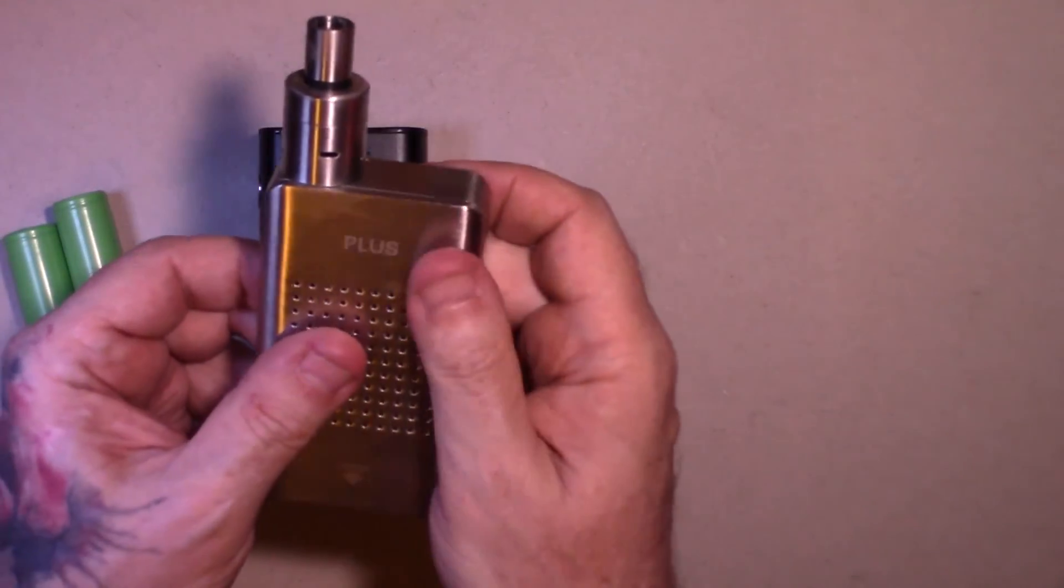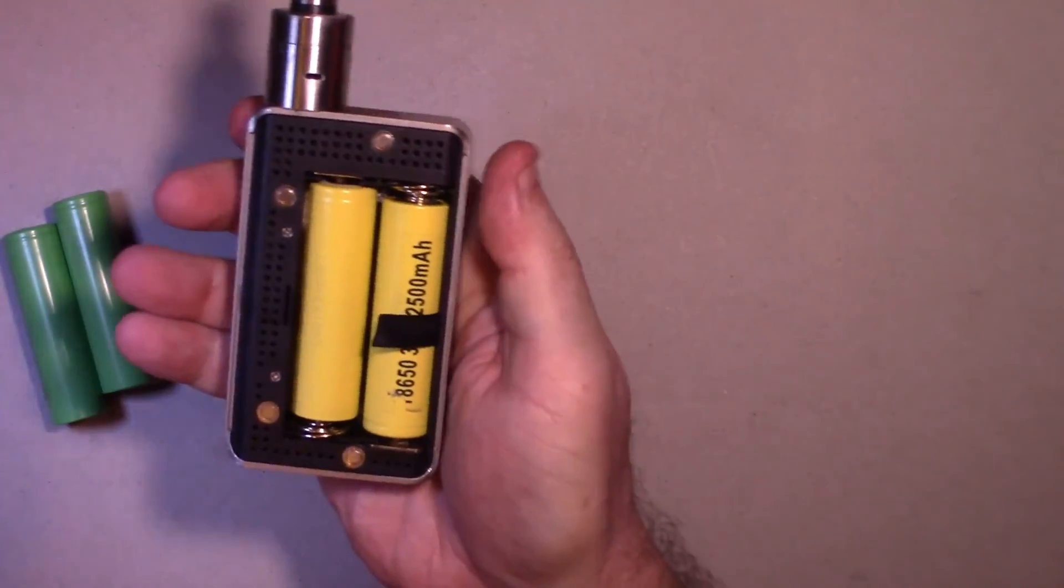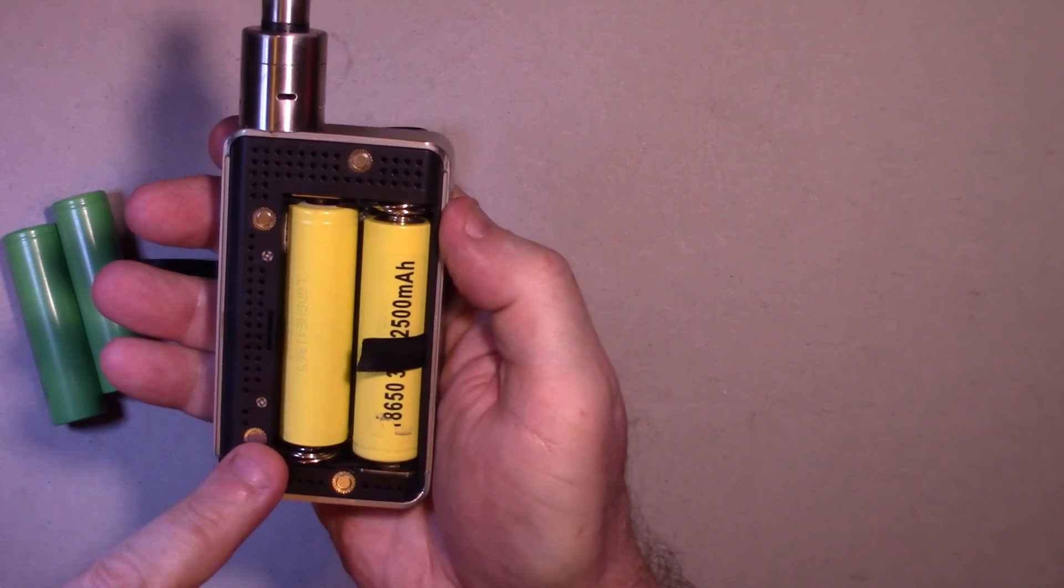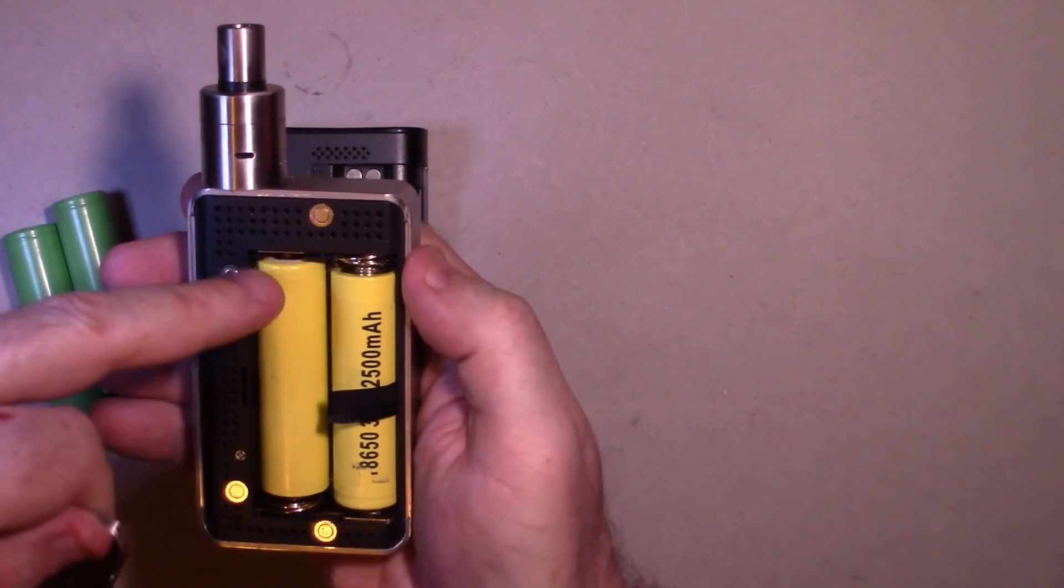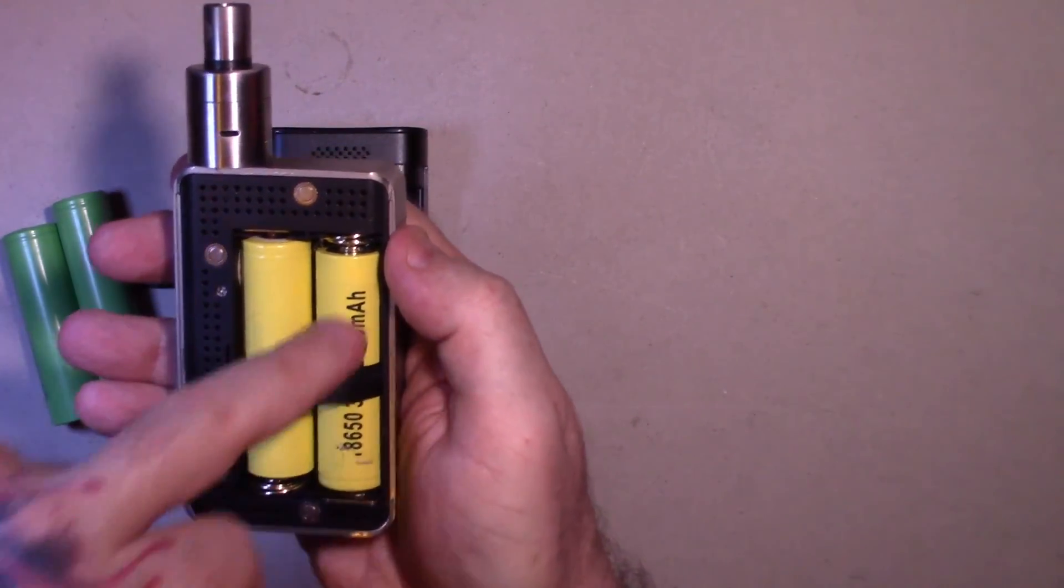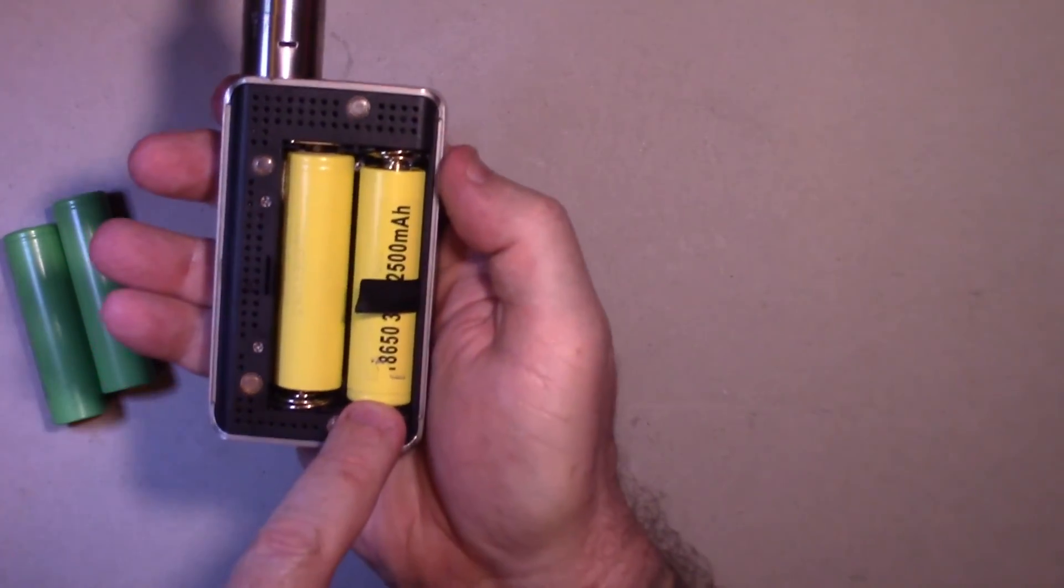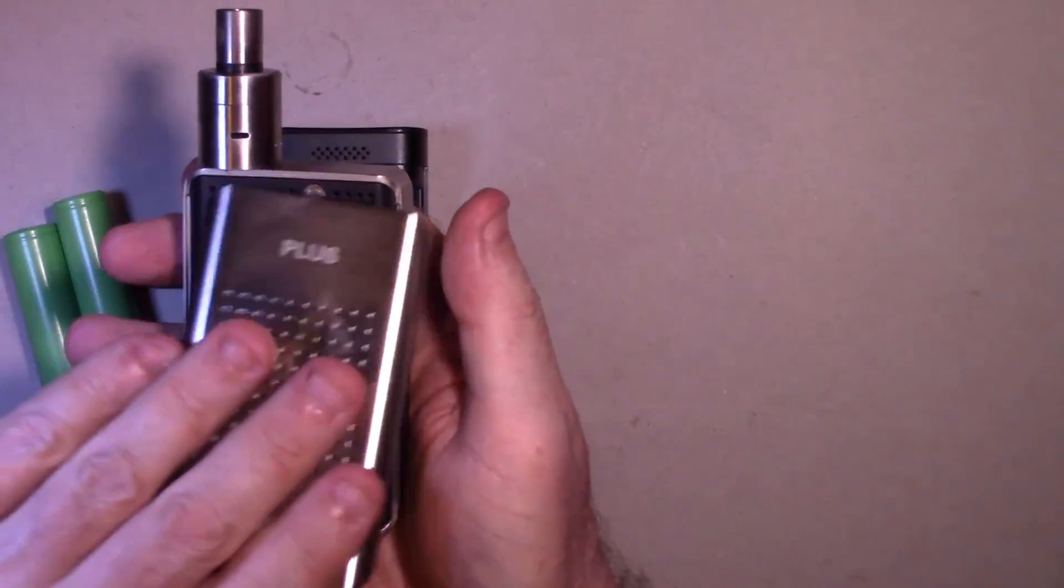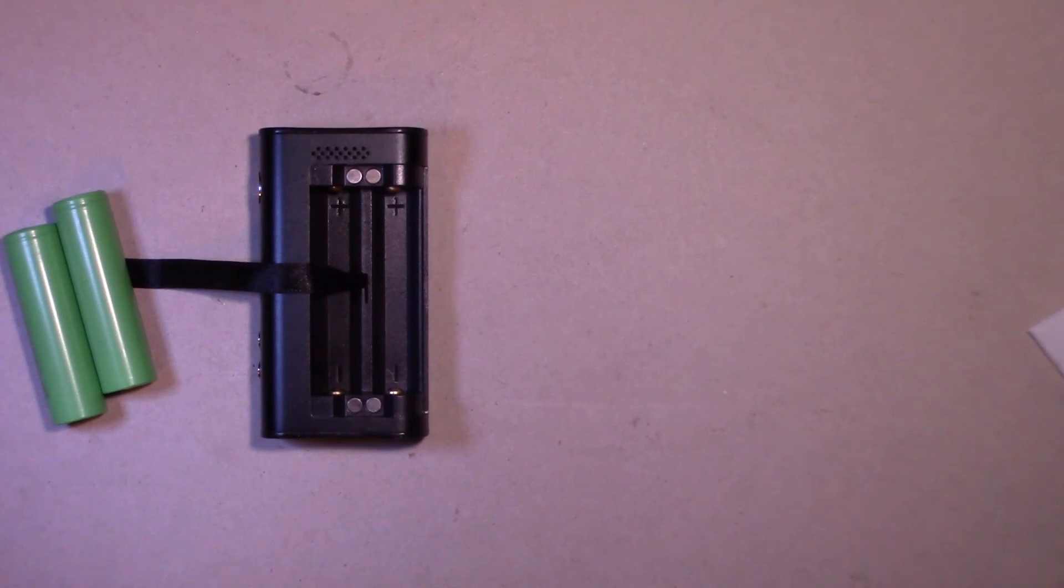In this mod, they are in series. The positive is here on this battery. The positive is down here. Well what does that mean?